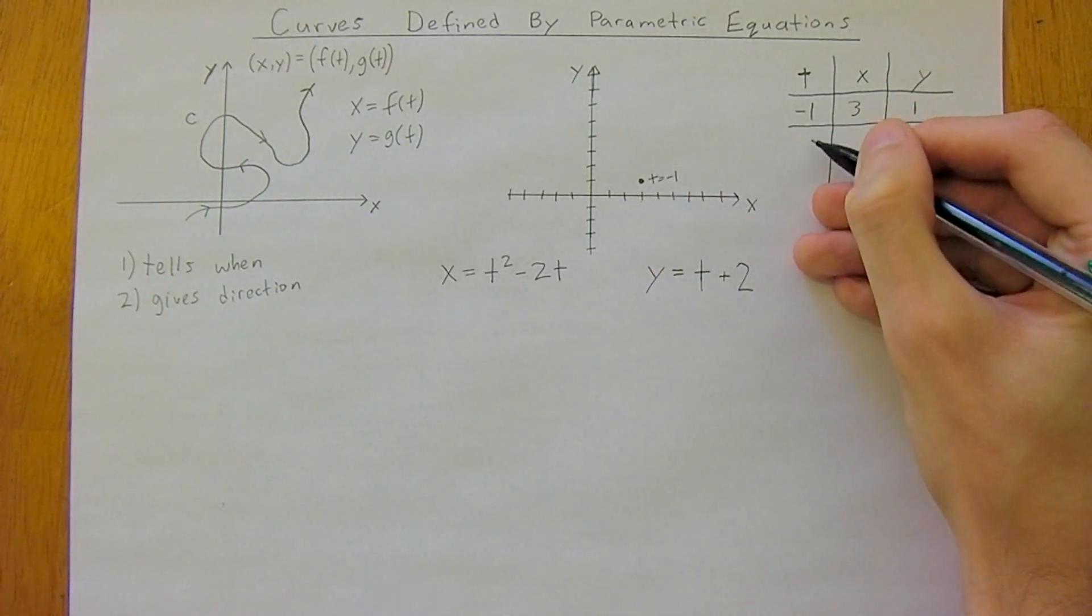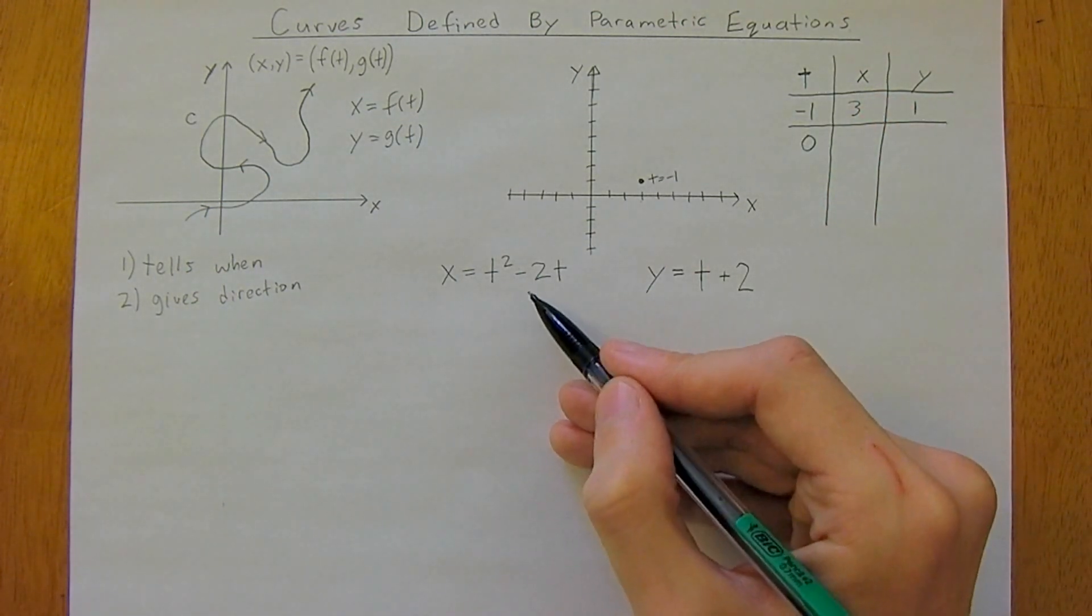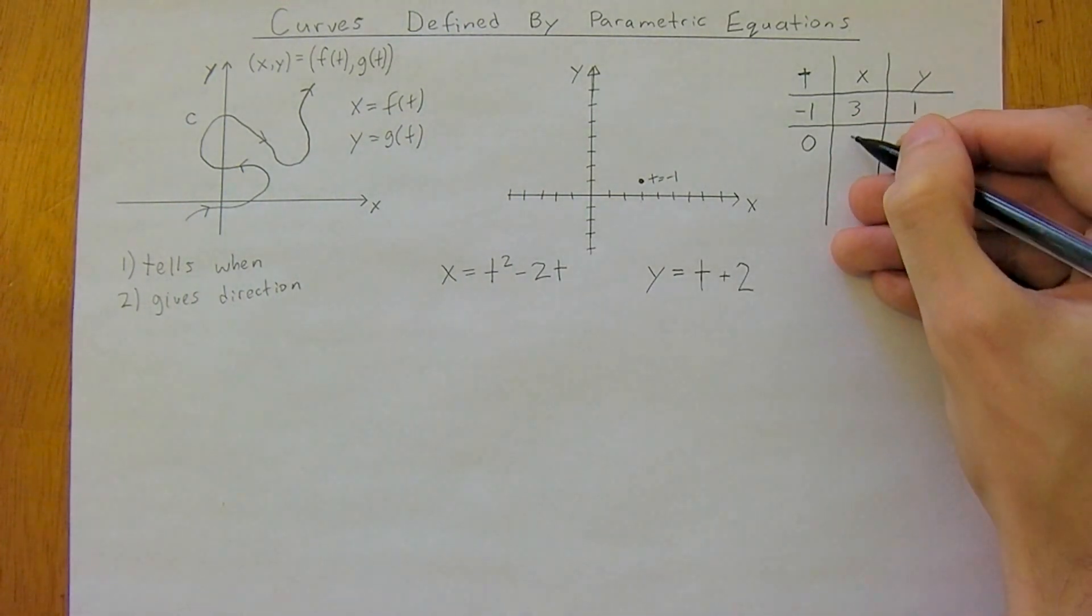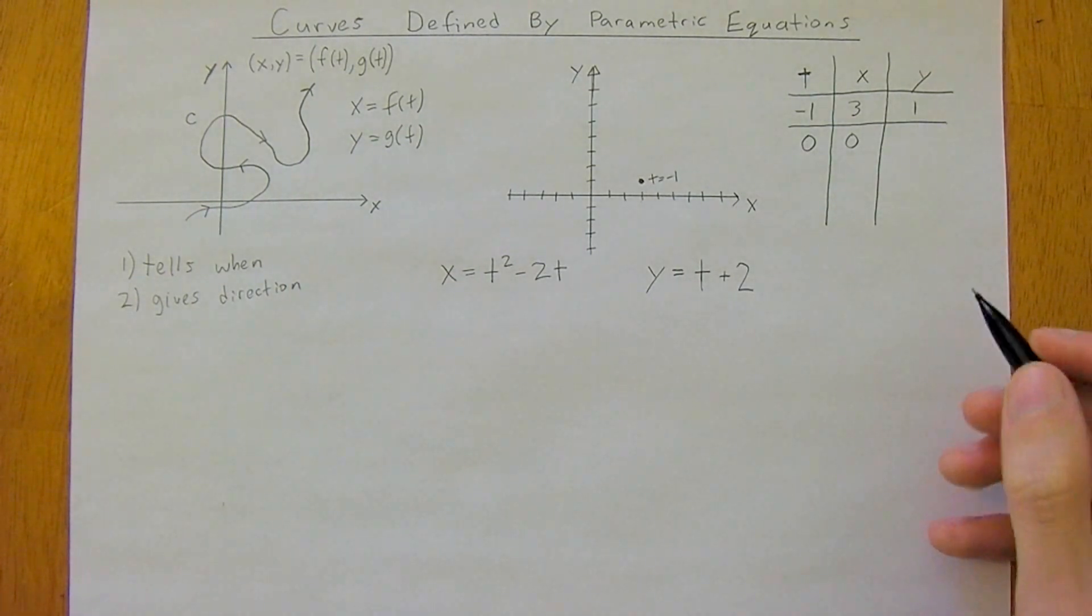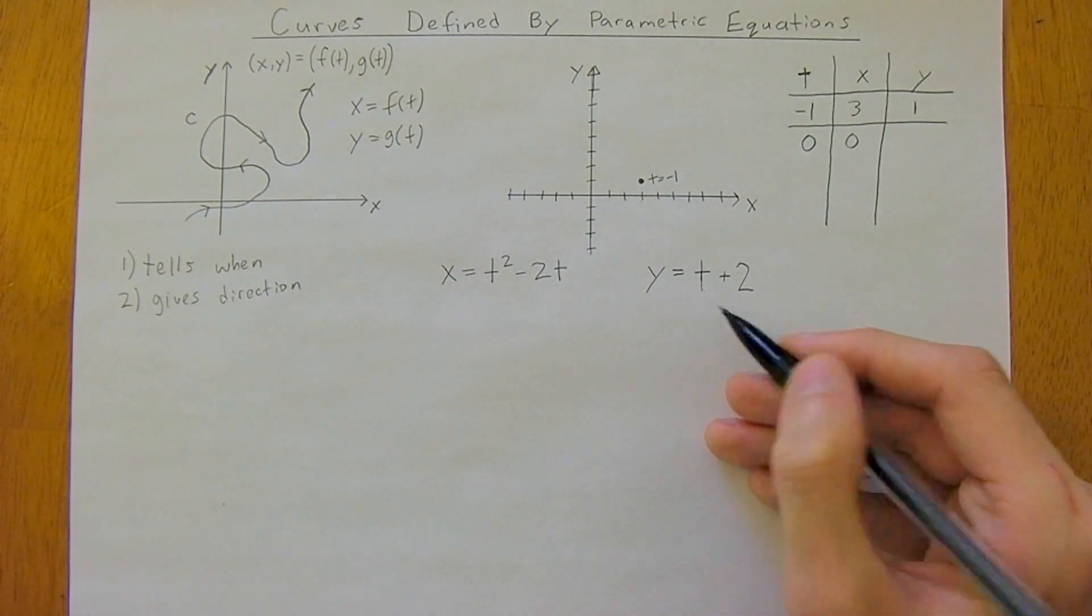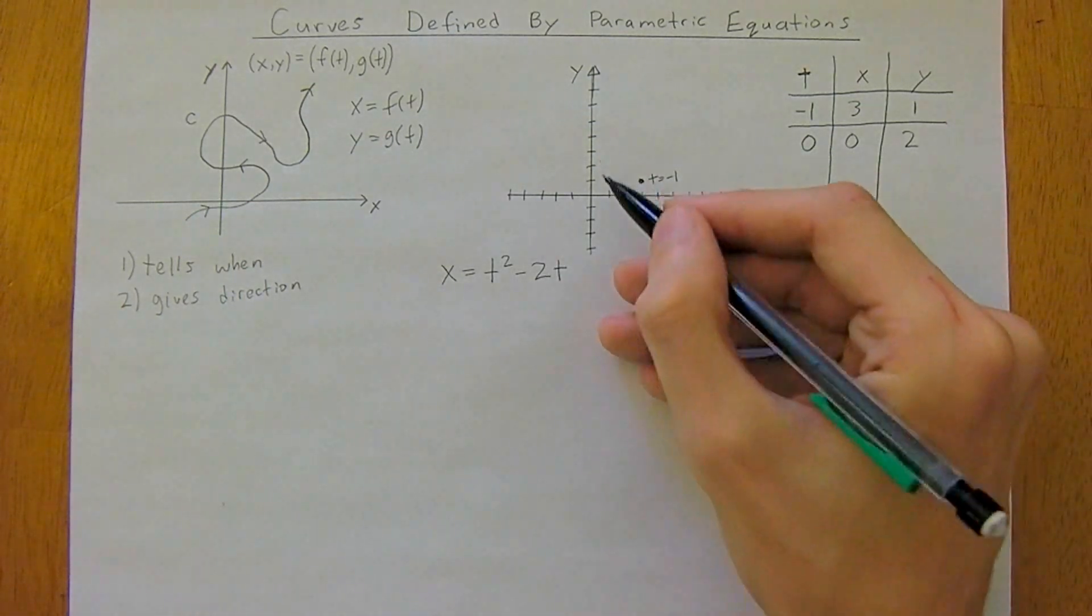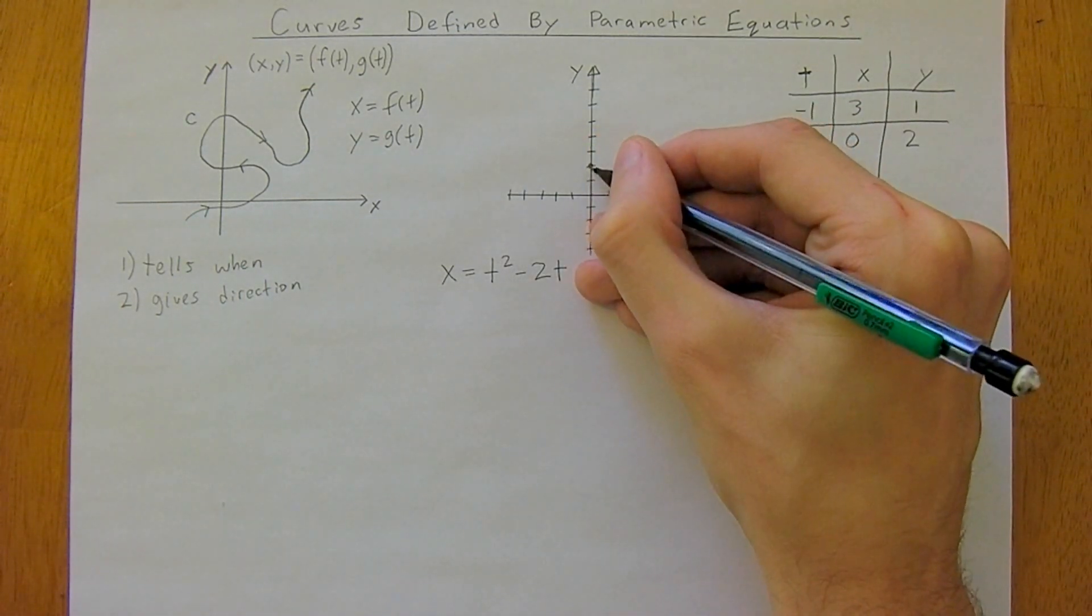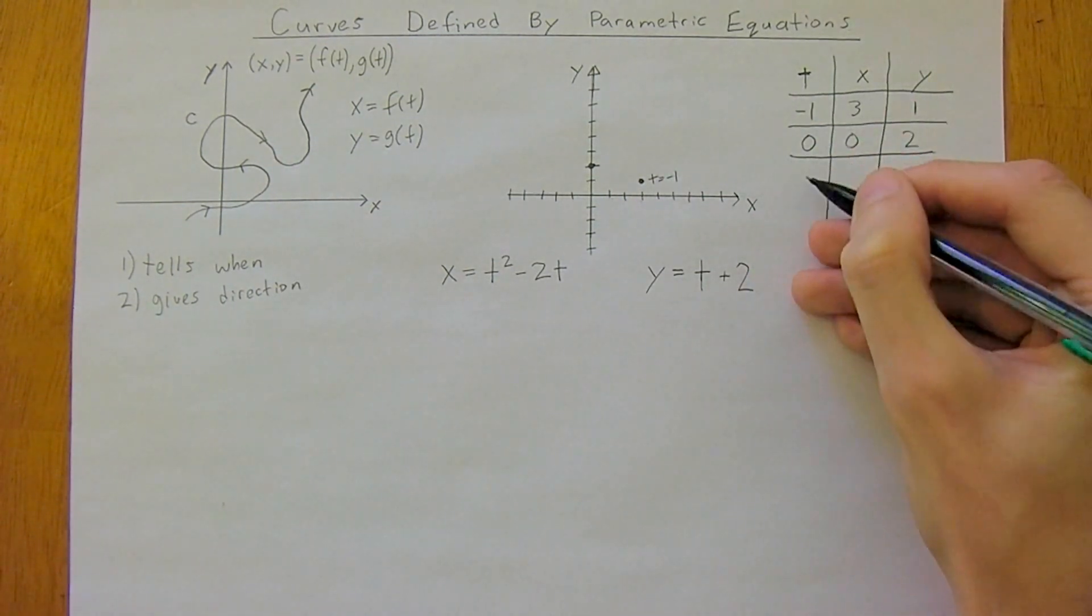We're going to keep doing this. Now t is 0. At t equals 0, we have x is 0, so 0 squared minus 2 times 0, and y equals 2. This is our next point: x is 0, y is 2.